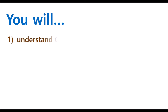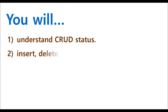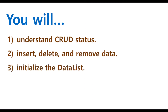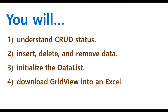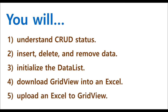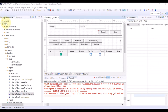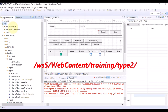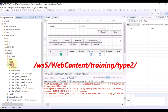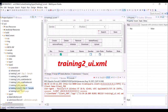In this video, you will understand what CRUD is: Insert, delete and remove data. Initialize the data list. Download grid view into an Excel and upload an Excel to grid view. This is the WebSquare 5 Studio. Go to WS5, Web Content, Training, and Type 2. Select Training 2 UI XML.